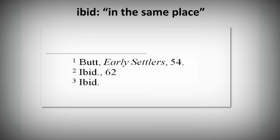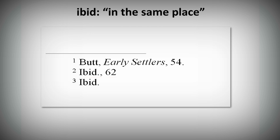If you cite a source and then are citing that same source again in the next note, you may use ibid, which is Latin for 'in the same place,' followed by the page number if the page number is different. Only use ibid if it refers to the source directly preceding it. If you're referring to that source again and the page number is also the same, you don't need to repeat the page number — you only need to write ibid.